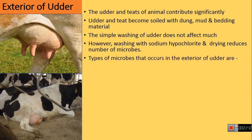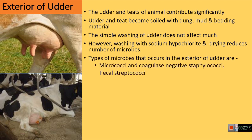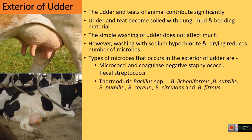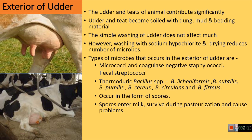The different types of microorganisms found at the exterior of the udder are, most predominantly, Micrococci and coagulase-negative Staphylococci, fecal Streptococci, and aerobic thermoduric Bacillus species. The most frequent are Bacillus licheniformis, Bacillus subtilis, Bacillus pumilis, Bacillus cereus, Bacillus circulans, and Bacillus firmus. Bacillus species occur in the form of spores, and when these spores enter the milk, they survive pasteurization and cause a number of post-pasteurization problems.